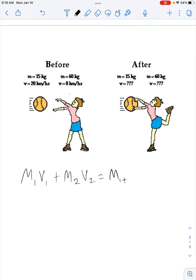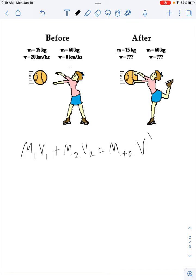All right. So the mass of object 1, which is the medicine ball, is 15 kilograms. So I'm going to write that here times the velocity of object 1, which is 20 kilometers per hour plus the mass of object 2, which is the girl. She weighs 60 kilograms times the velocity of the girl, which is zero because she's not moving.